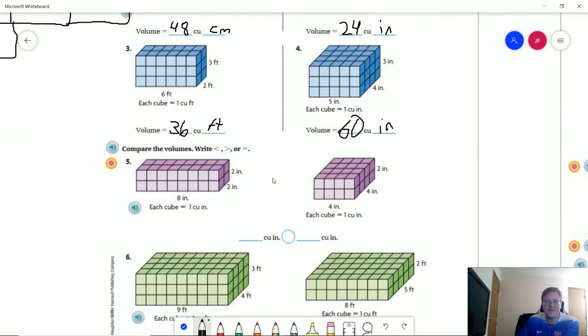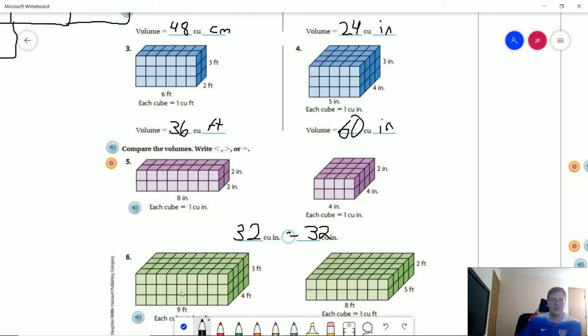For number five we have two different things that are going to end up having the same total volume. 8 times 2 gives us 16, 4 times 4 gives us 16, and both of those times 2 would give us 32 cubic inches. So 32 cubic inches is equal to 32 cubic inches.